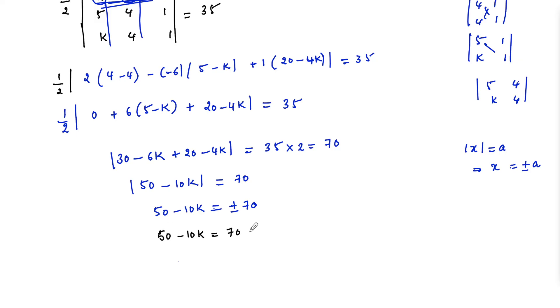So we have 50 minus 10k equals plus 70, or 50 minus 10k equals minus 70. Or we can write minus 10k equals 70 minus 50 is 20.